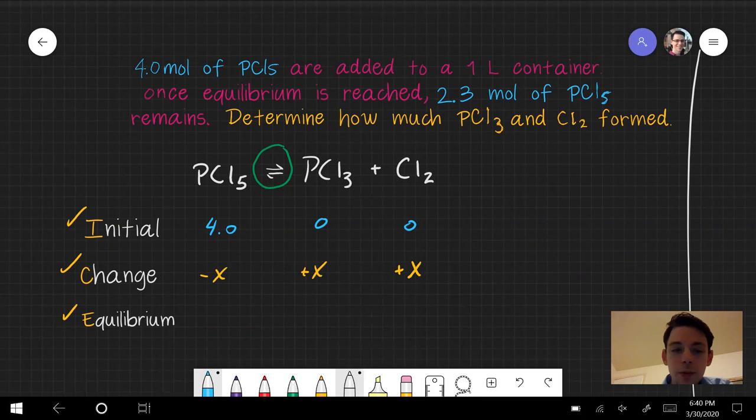Okay, so let's fill in that last row. The first is going to be 4 minus x, and x is 0 plus x or just x, and also just x. Remember, the final row is just the sum of the previous two rows.